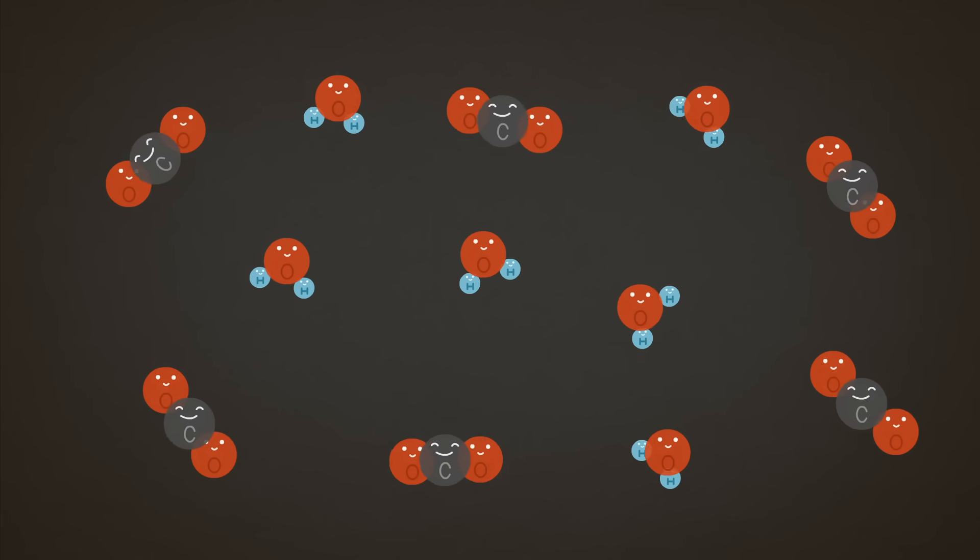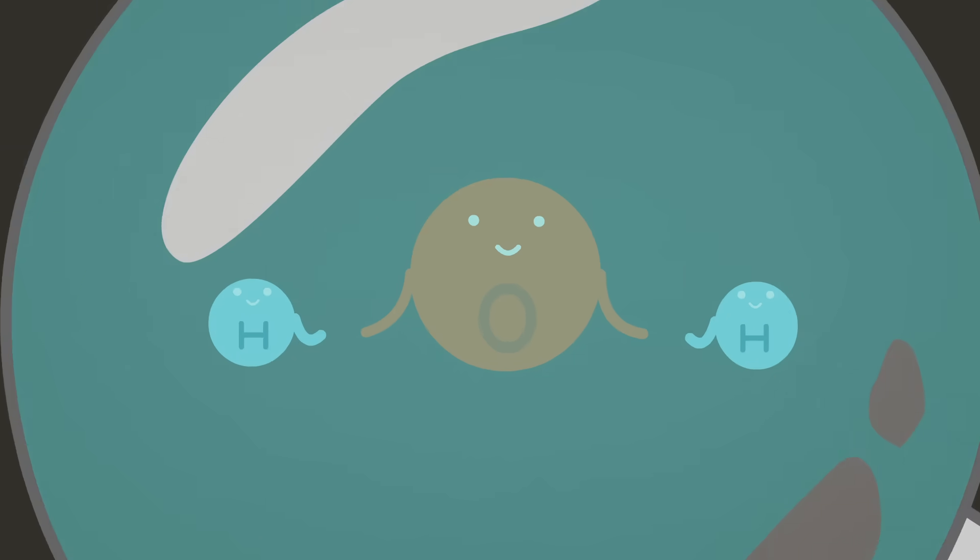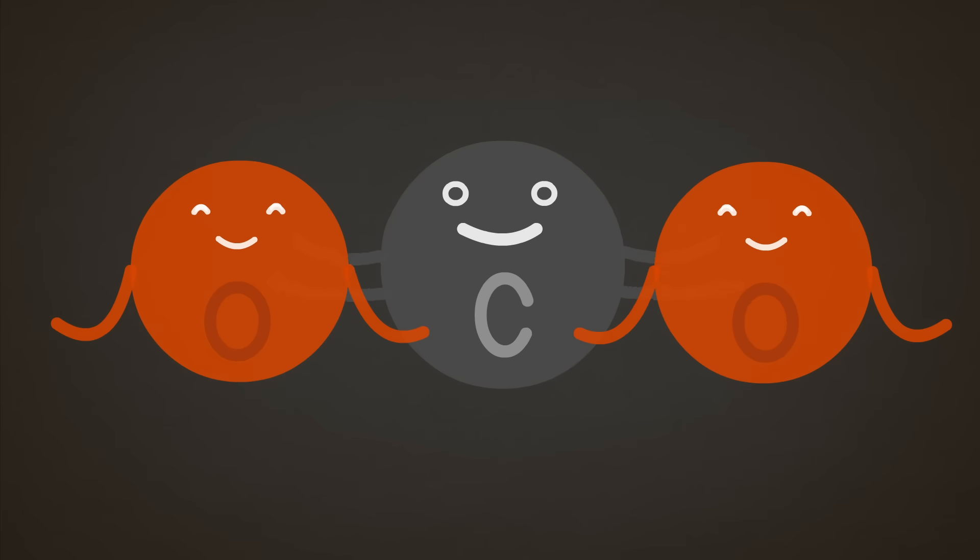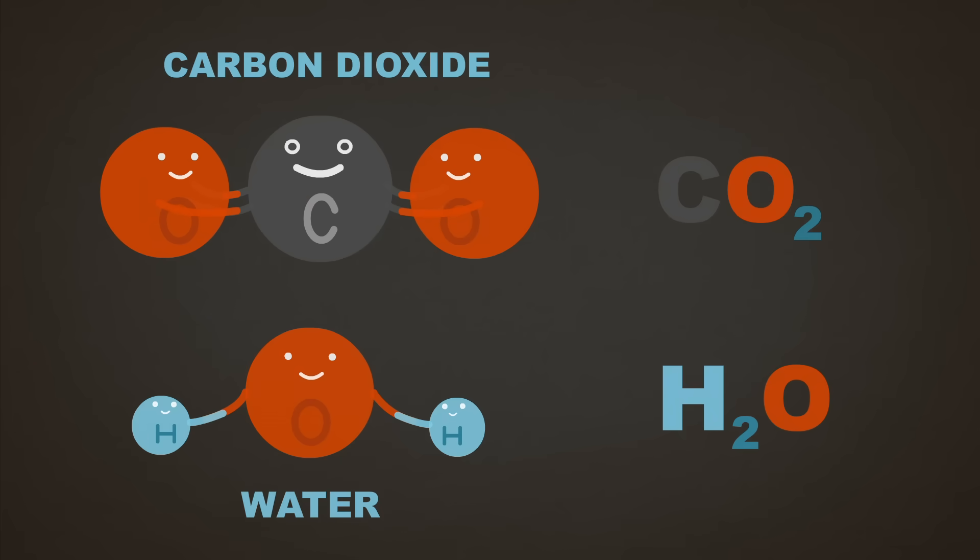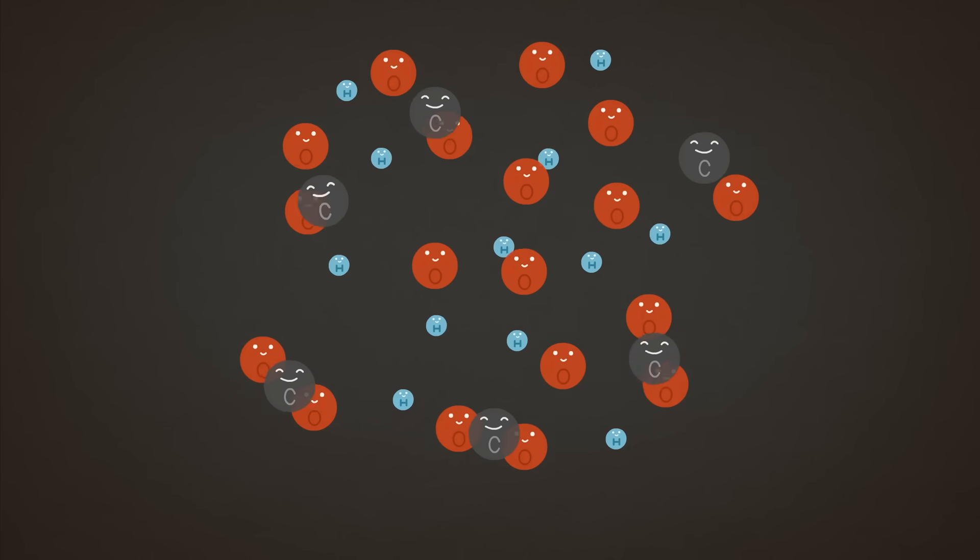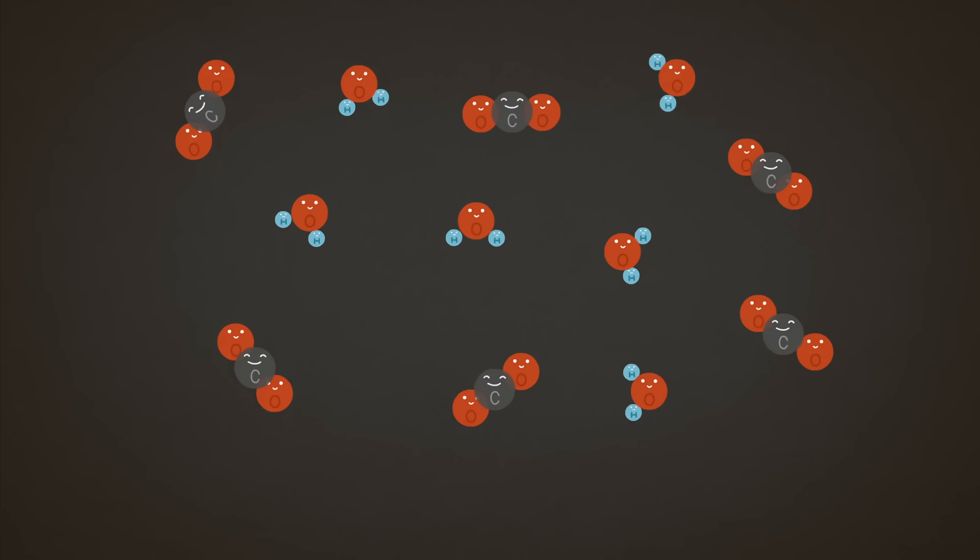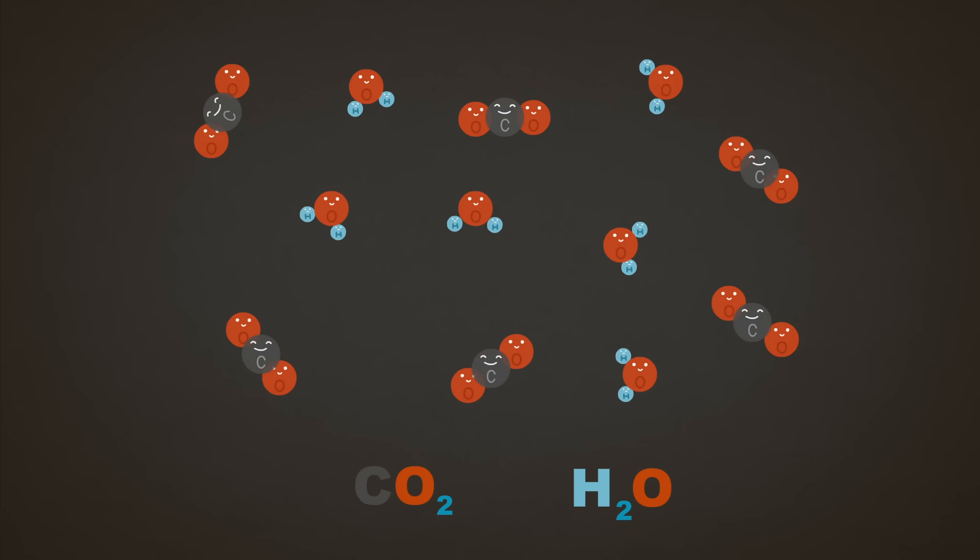These atoms can bond together to form familiar molecules. Here's water, and here's carbon dioxide. We can't create or destroy mass. We're stuck with what we've got. So what can we do? Ah, they have a mind of their own. Let's see. They've formed more carbon dioxide and water, six of each.